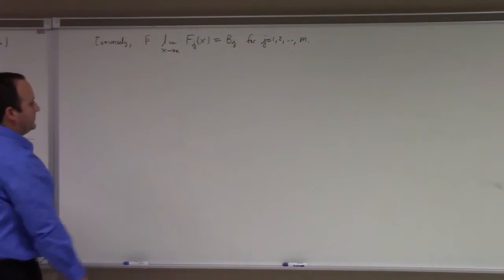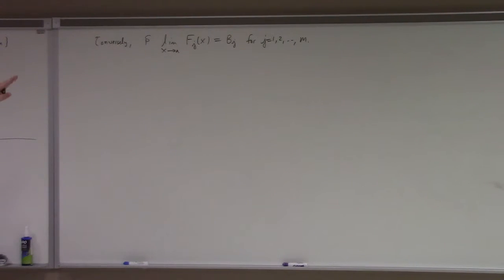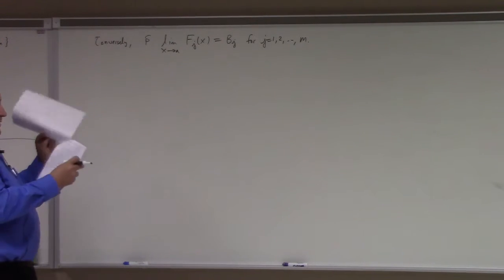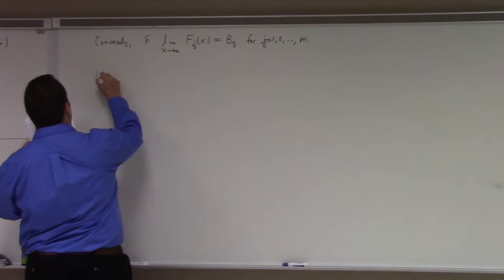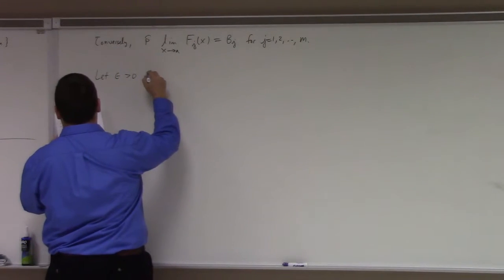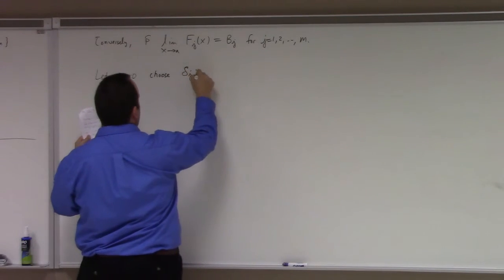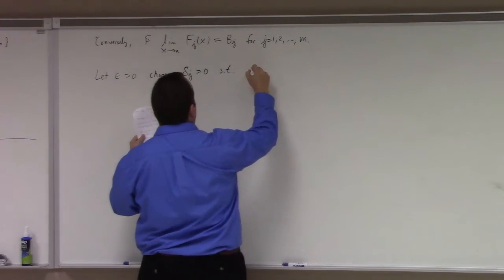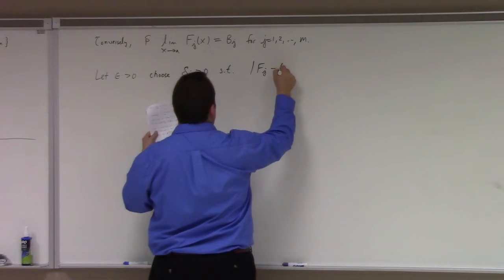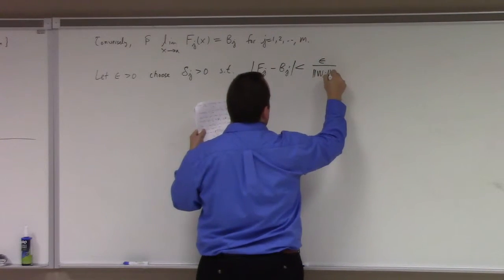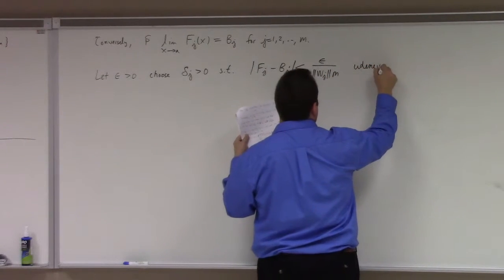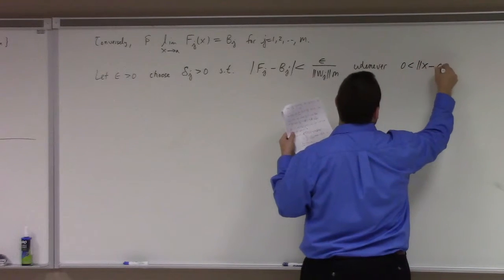You could just as well build that argument for 1 or 2 or 3 or m. Now suppose that the limit of each component function exists. Then what I can do, what I can do then is I can say, okay, well, let epsilon be greater than 0, and choose delta sub j greater than 0 such that what? Such that the f sub value of f sub j minus b sub j is less than epsilon divided by the norm of wj, the length of the jth basis vector times m, whenever what?